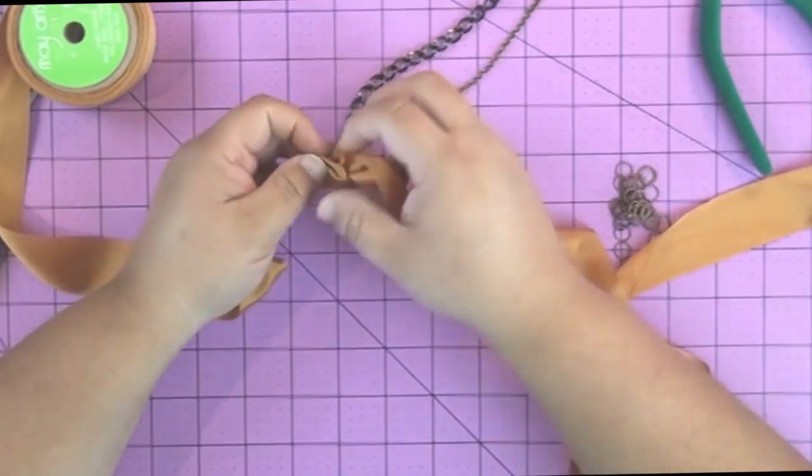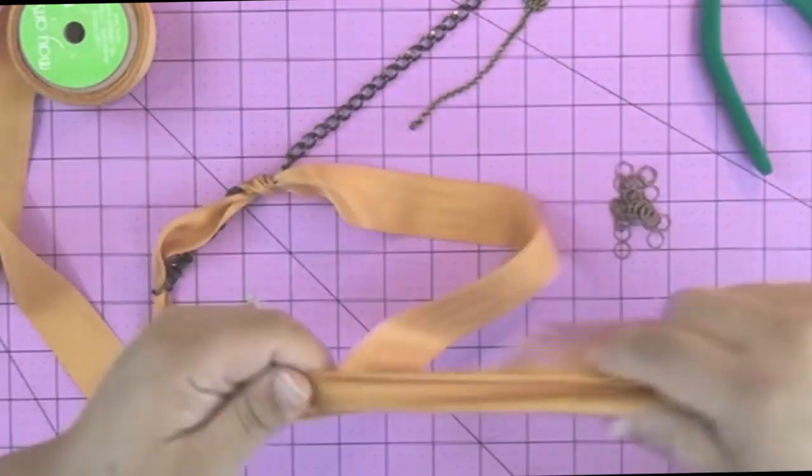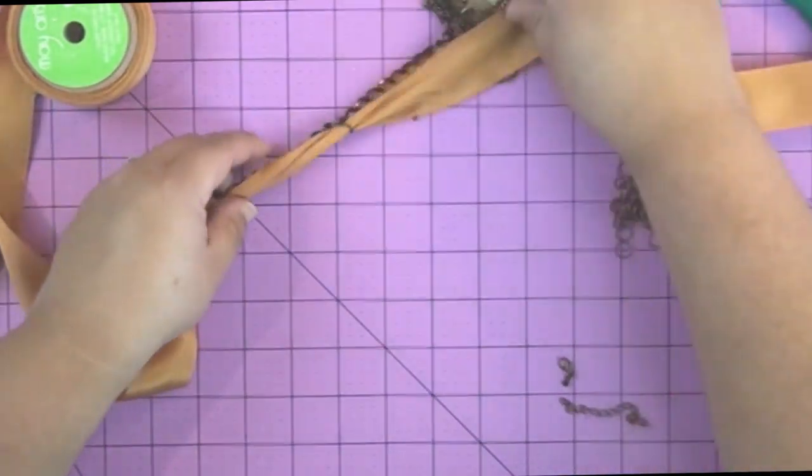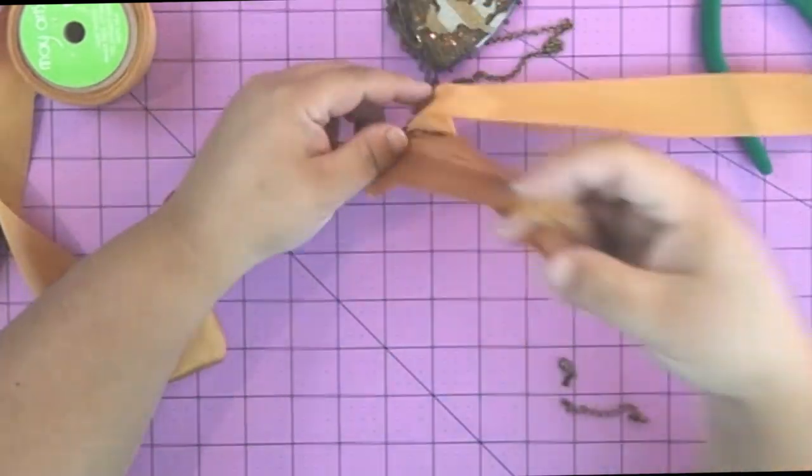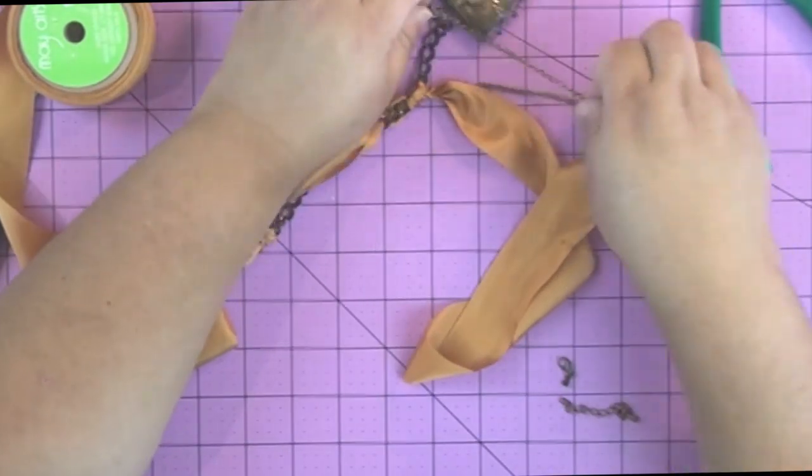What I'm doing is I'm threading the ribbon through the links of the chain, maybe every 12 or 15 links. I was just guesstimating, like maybe every three inches.